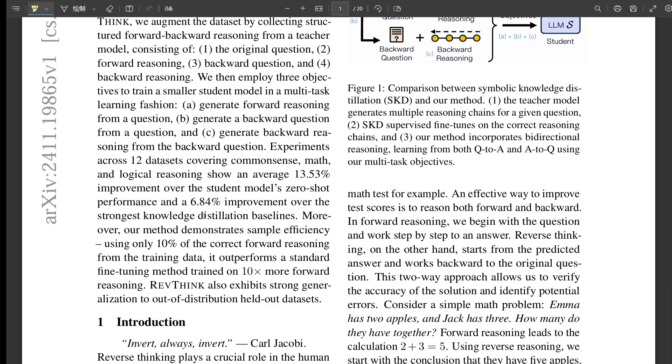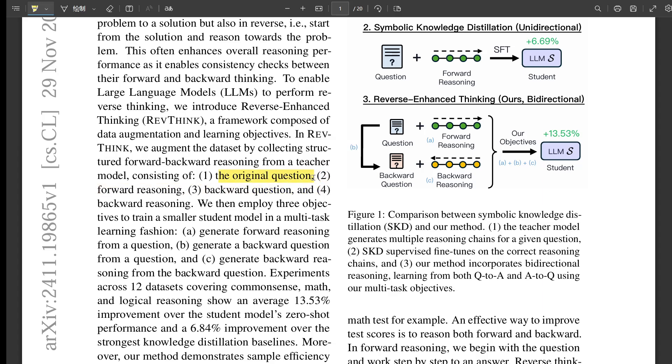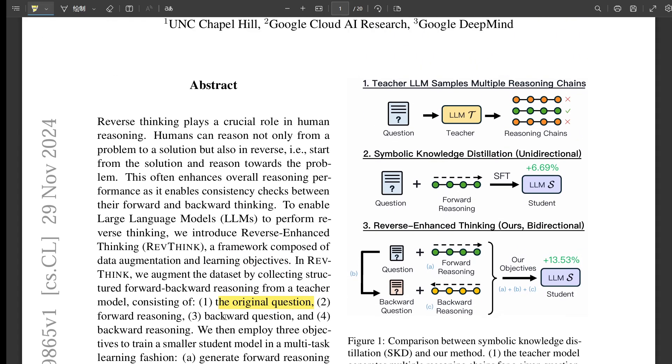Rethink has two main parts. First, they change the training data in a really specific way, and then they use something called multitask learning to actually train the AI. Instead of just adding more data, they use a bigger, more powerful LLM, they call this the teacher model, and they use it to create extra data that specifically teaches reverse thinking. The teacher model is showing how to think forward and backward.